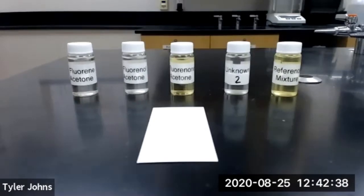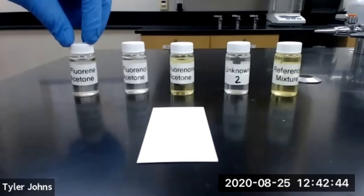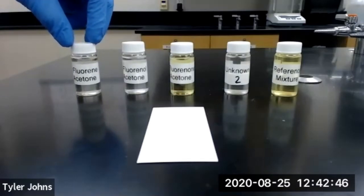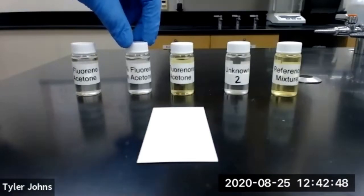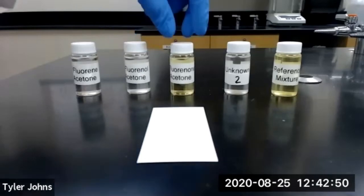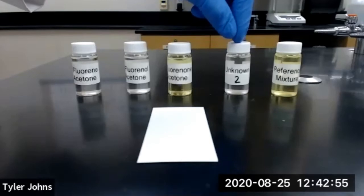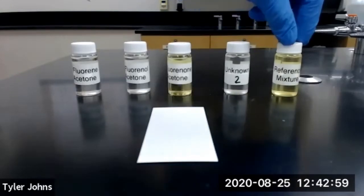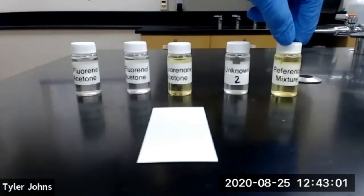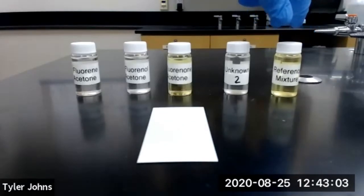We are going to start by spotting 2% solutions of each of our compounds on our TLC plate. So we have our 2% fluorine solution, our 2% fluorinol solution, our 2% fluorinone solution, our unknown number two, in which we need to identify which compounds are in it, and our reference mixture, which contains fluorine, fluorinol, and fluorinone.